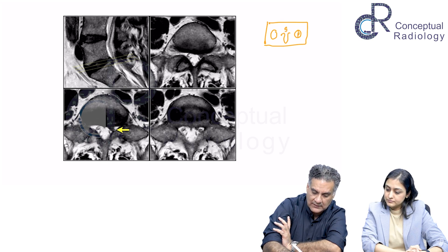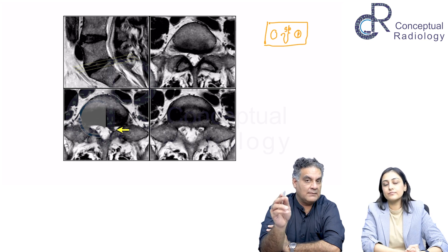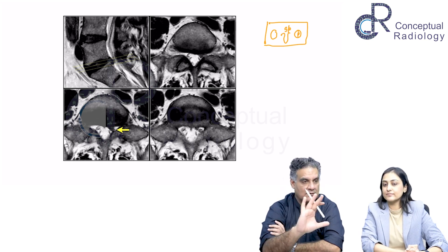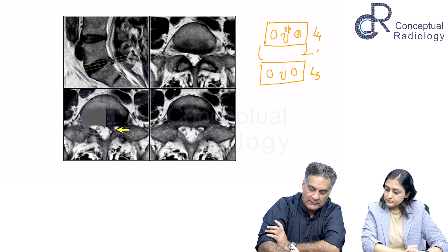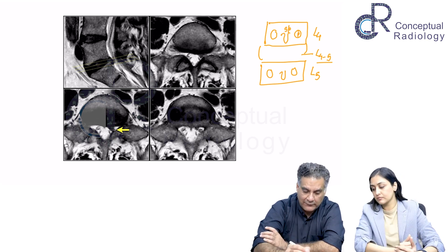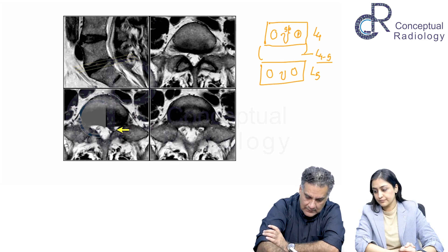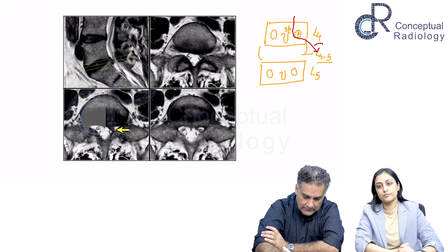For example, if there is destruction of a single pedicle, that is called the winking owl sign, and destruction of both pedicles is called the blind bat sign — these are radiological appearances on X-ray. Now, this is my L4 vertebra and this is my L5 vertebra, and this is the L4-L5 disc. The rule says the L4 nerve root will exit beneath the L4 pedicle, and the L5 nerve root will travel across the L4-L5 disc level.